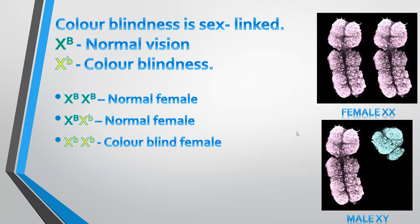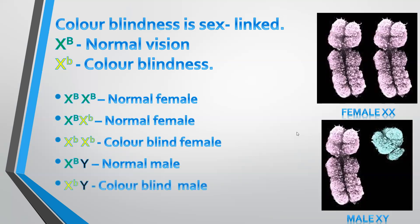A normal male would inherit the Y chromosome from the father, which doesn't carry any information, but from the mother he'll get the normal allele. And if a male has colorblindness, he'd inherit the colorblindness allele from the mother, and the father's Y chromosome would have no effect on the phenotype.